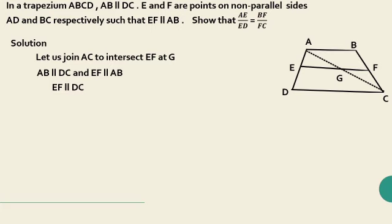In triangle ADC, EG is parallel to DC. So by basic proportionality theorem, AE by ED is equal to AG by GC. This is equation 1.